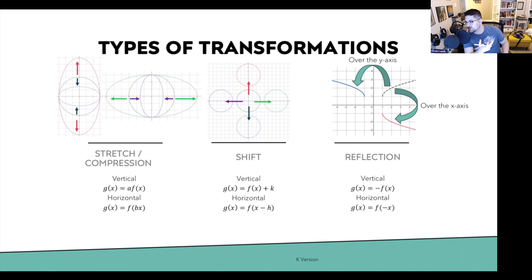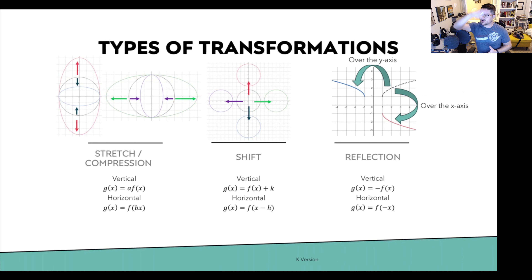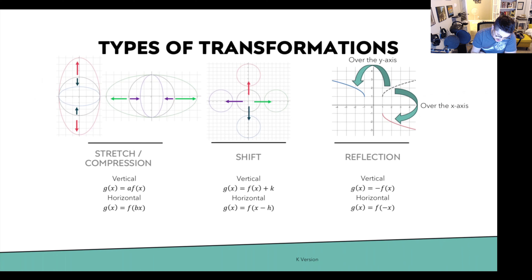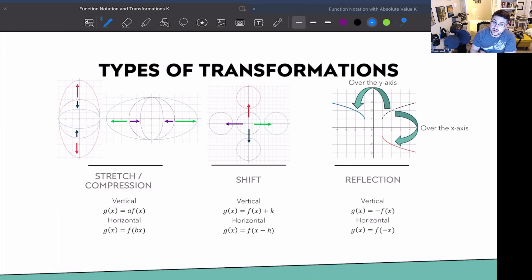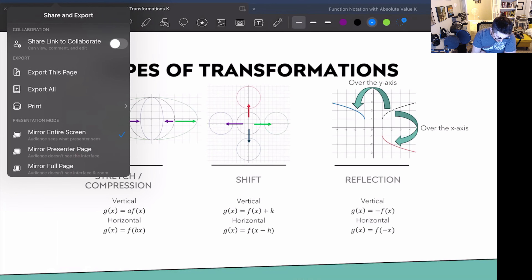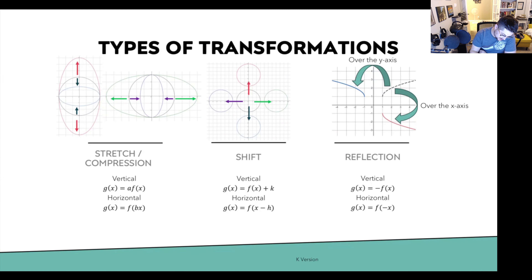Let's talk about what these transformations look like. We can have a stretch or compression, which is essentially changing the size — we can stretch or compress vertically or horizontally. This would be a vertical one — that's going up and down. And then we can also have horizontal, which is going left and right.